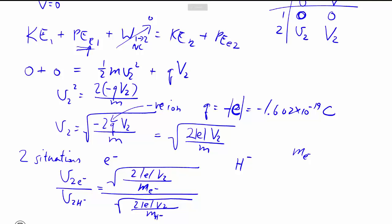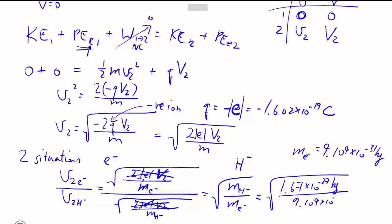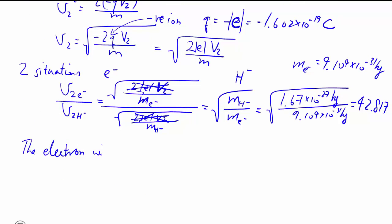That's given to us. And this one, we can look up as that amount. They are going through the same voltage, so that's why the V2 are exactly the same. These guys all cancel out. And then you're left with mH minus and e minus, because it's multiplying by the reciprocal and we divide. So the electron will be 42.8 times faster than the hydrogen ion will be going through the same potential.